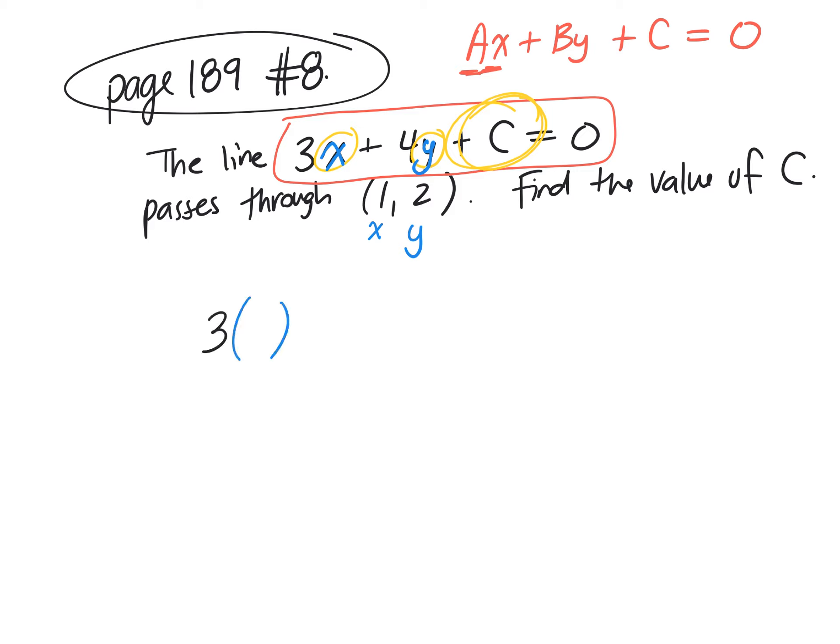3 times X. What's X? What's the value of X in the question? Plus 4. What's the value of Y? 2. We're using this coordinate, X and Y. We're just replacing X and replacing Y. Plus C. I don't know C. The question says find C. Equals 0.